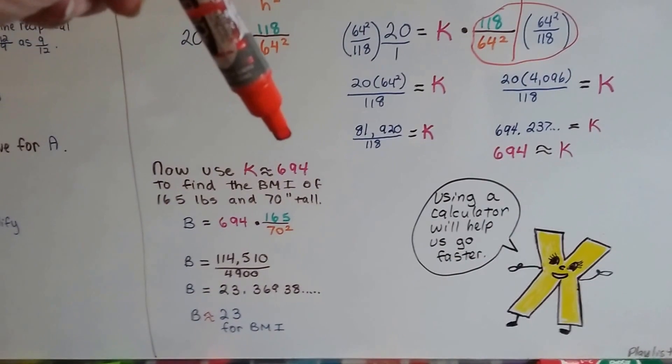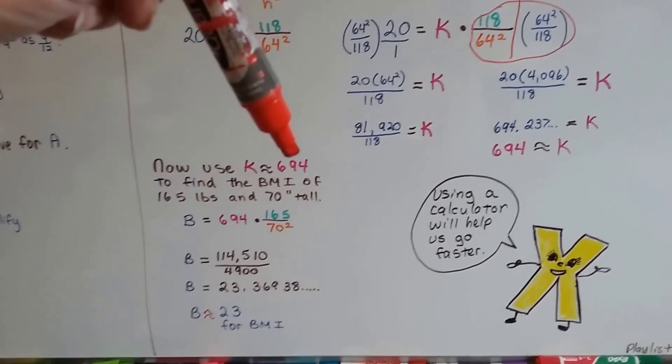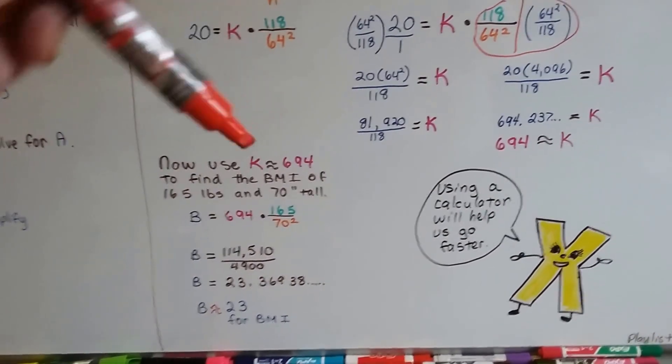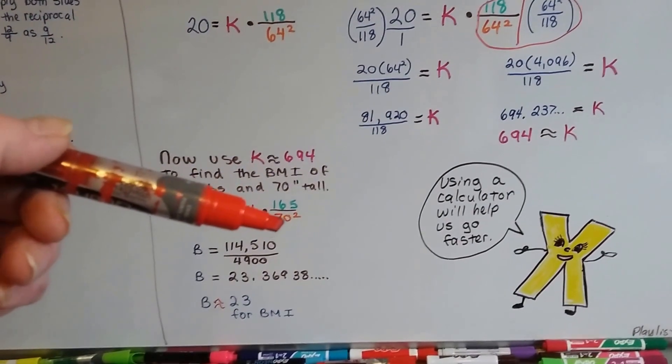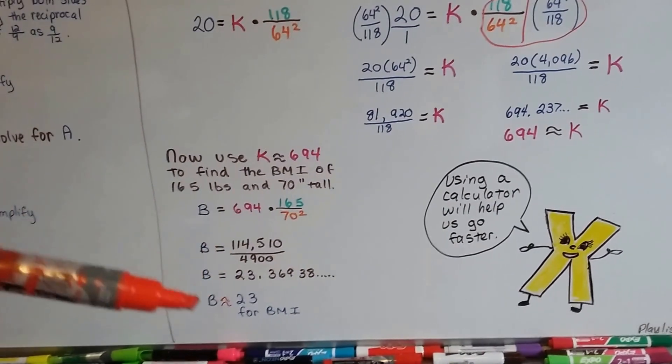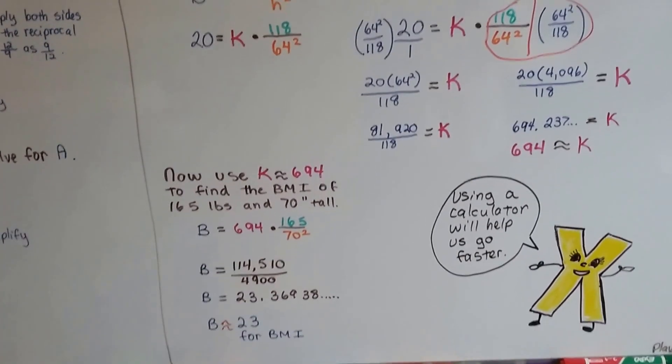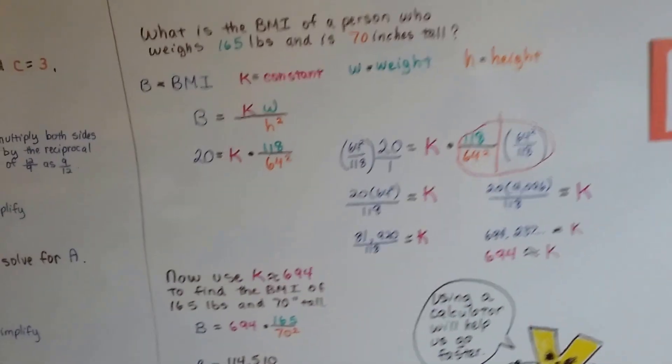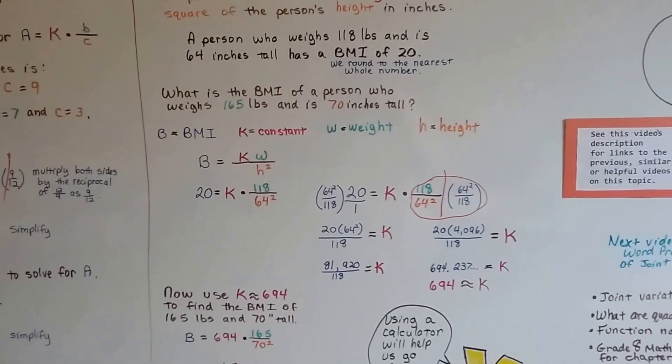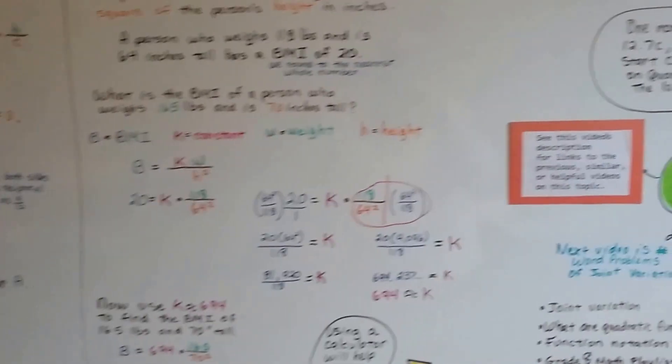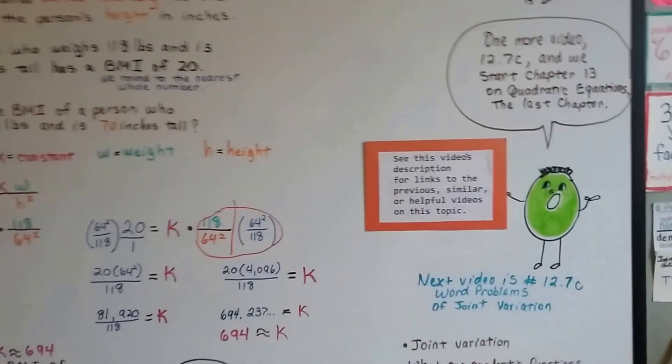So try this with your own weight. Use 694 as your approximation for K. Put your weight in. Square your height. Do the division in the math and see what your BMI is. If it's 25 or under, then you're healthy. It's a pretty neat way of checking this out on your own.